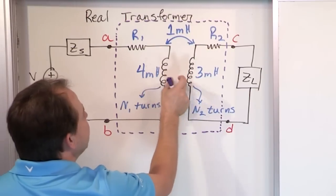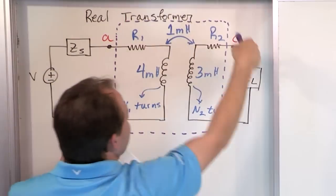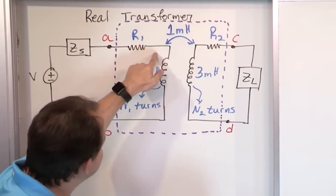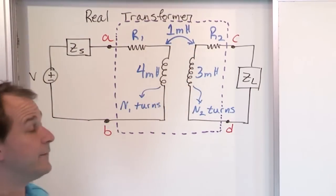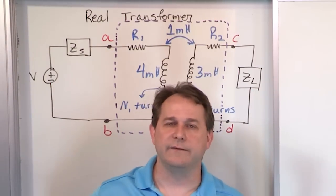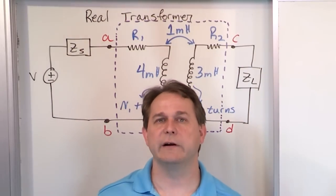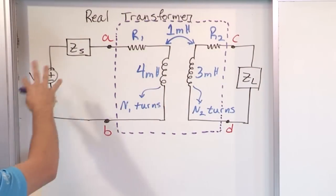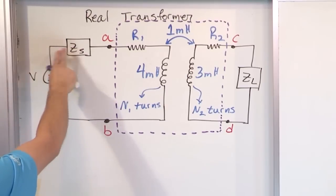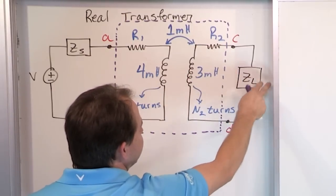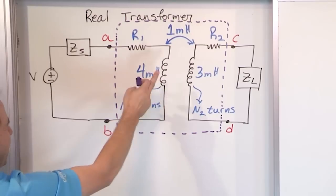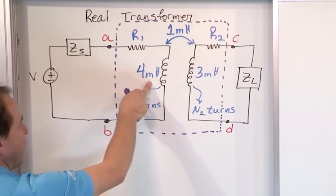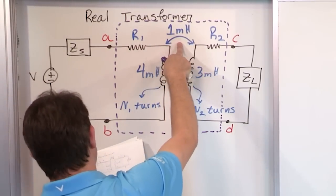This mutual inductance means that when the primary coil is activated, it's inducing a voltage in the secondary. Since the source is driving the primary side, the secondary coil has an induced voltage given by M·di1/dt — mutual inductance times the derivative of the current on the other side of the circuit. So this is what we call a real transformer. It has losses in the source ZS, losses in the load ZL, losses in coil 1 (resistance R1 causing dissipative heat), and losses in the secondary coil. It has finite self-inductances L1=4mH and L2=3mH, and a finite mutual inductance of 1mH.